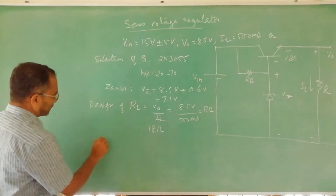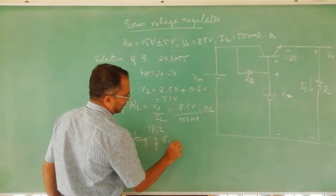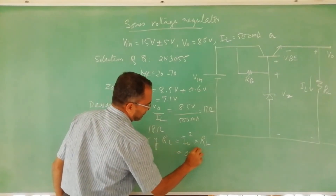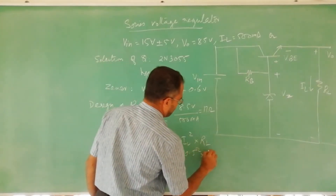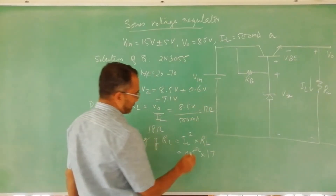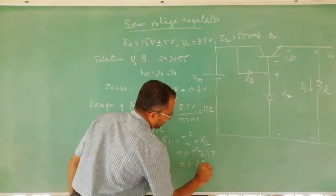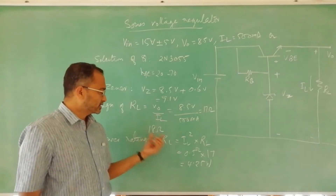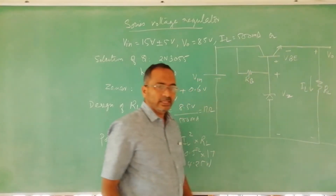The power rating of RL is IL squared times RL: 0.5 amperes squared times 17 ohms gives about 4.25 watts. For safety, we select a resistor of 18 ohms rated at 5 watts or 10 watts.